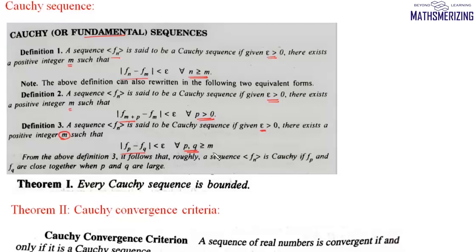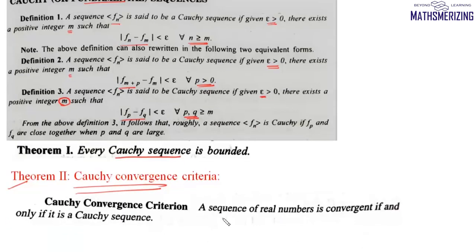There are two theorems on Cauchy sequences. The first theorem is: every Cauchy sequence is a bounded sequence. The second theorem is Cauchy's convergence criteria, which states that a sequence of real numbers is convergent if and only if it is a Cauchy sequence. So every Cauchy sequence is convergent, and vice versa.